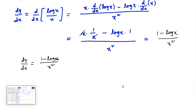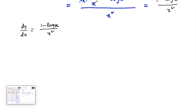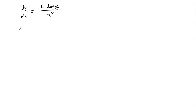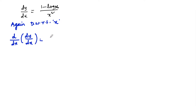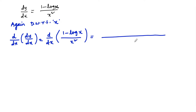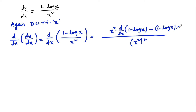Again differentiating to get the second order differentiation. Again differentiating with respect to x. So we have d by dx of dy by dx is equal to d by dx of 1 minus log x upon x square, which we can write upon x square whole square: x square into d by dx of 1 minus log x, minus of 1 minus log x into d by dx of x square.